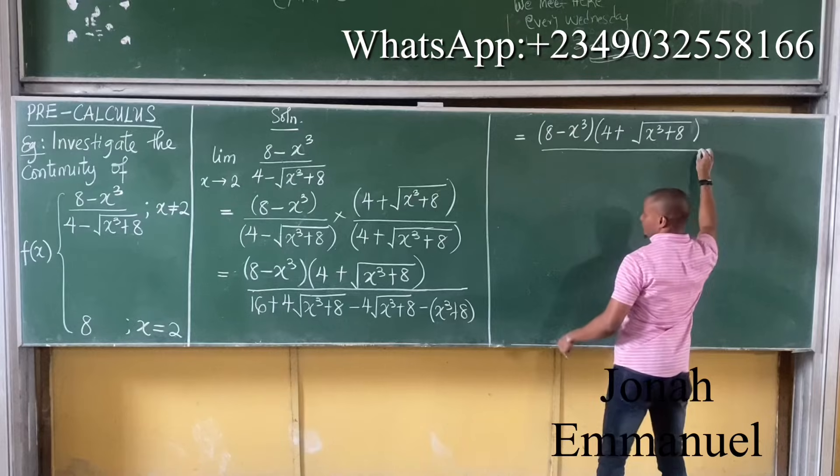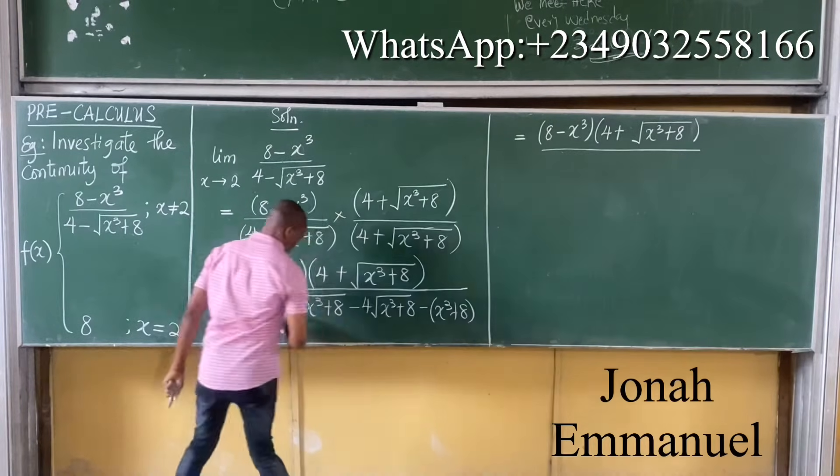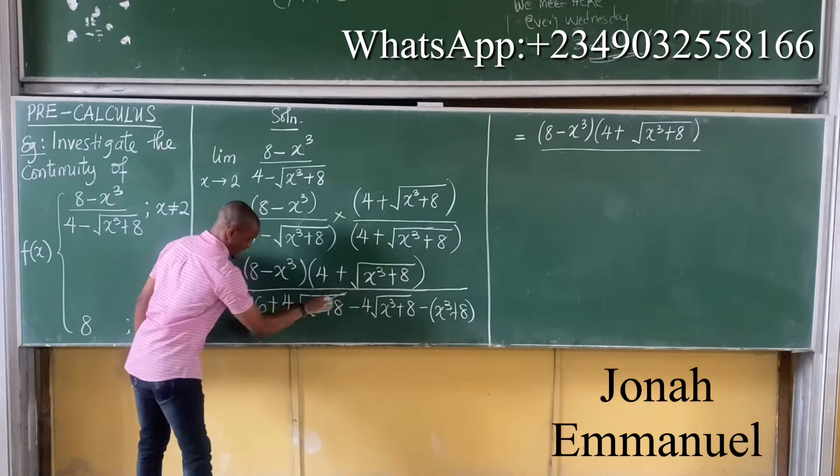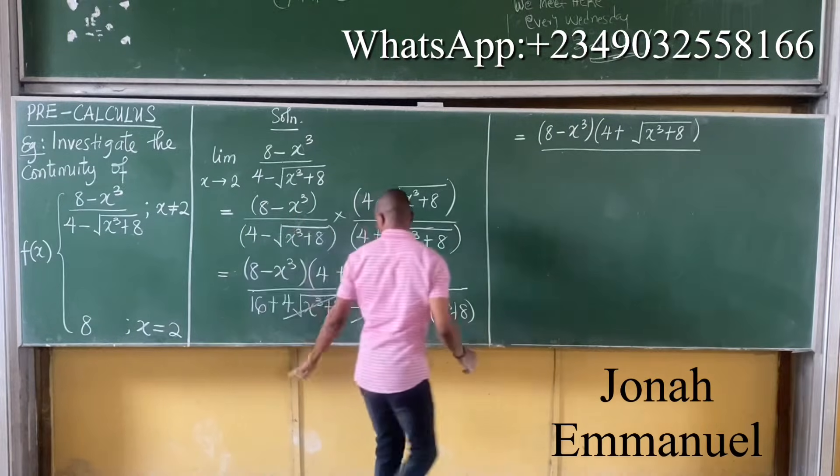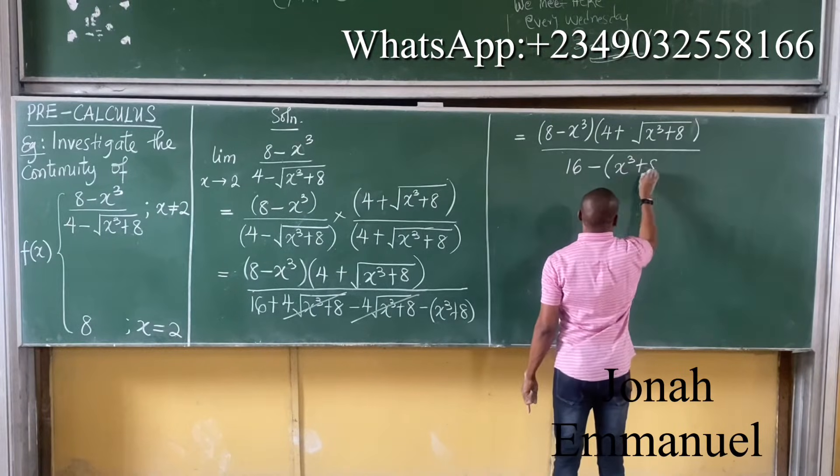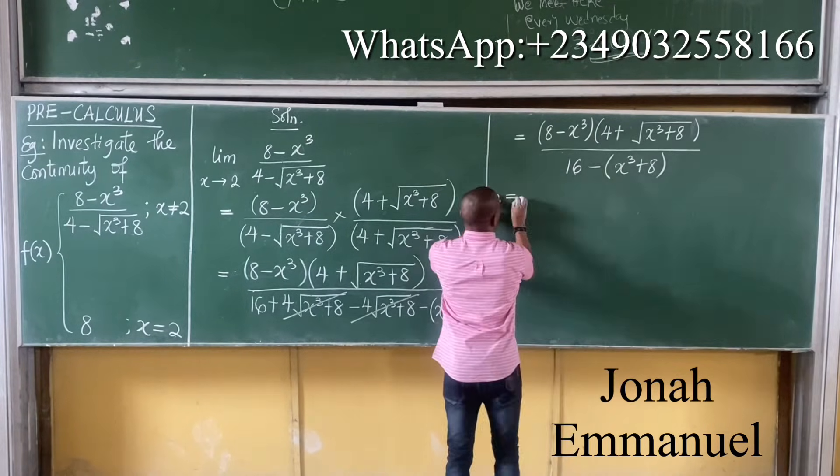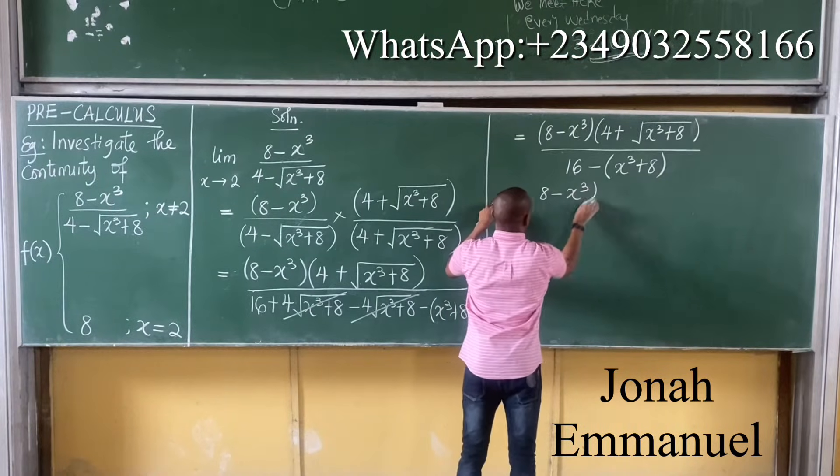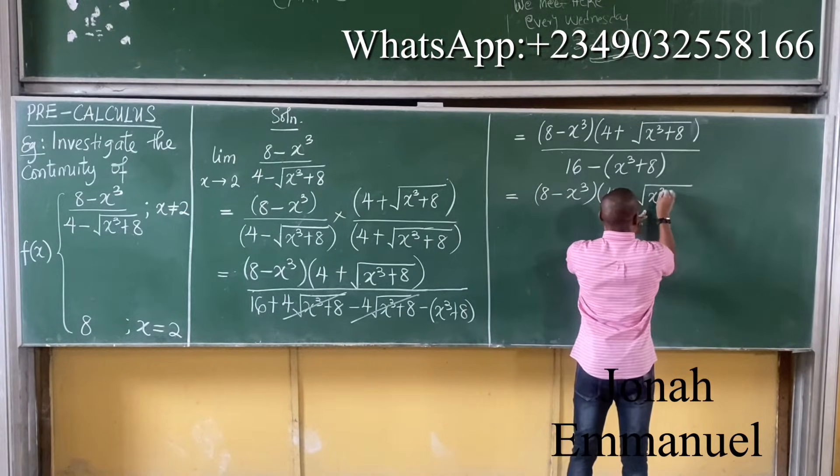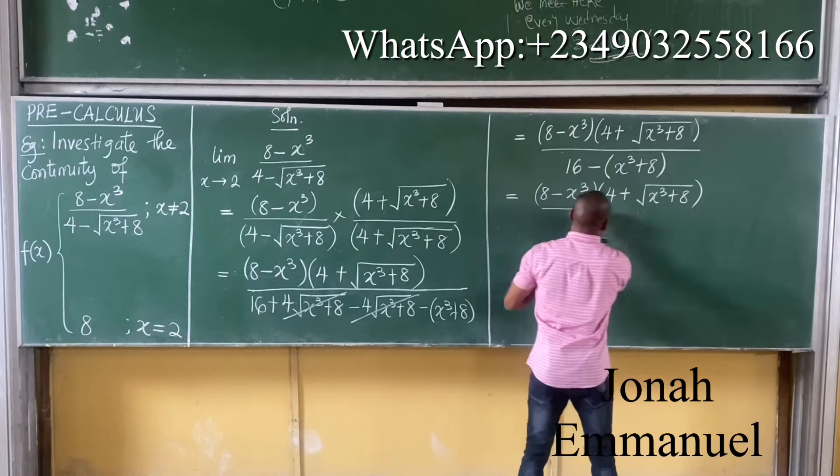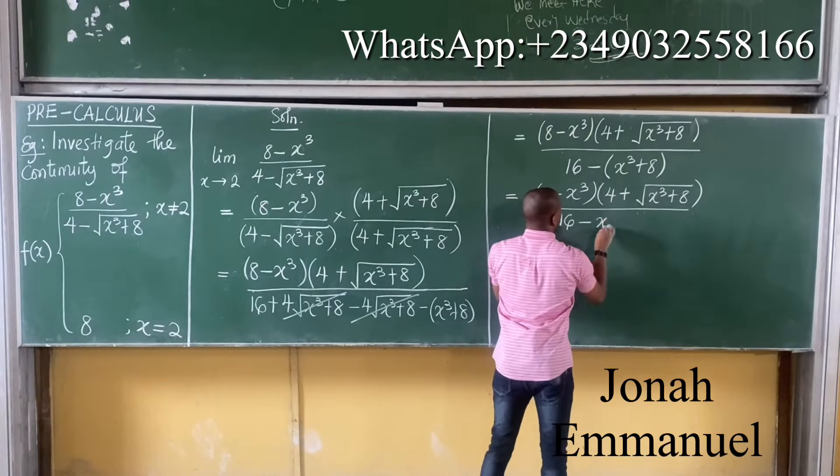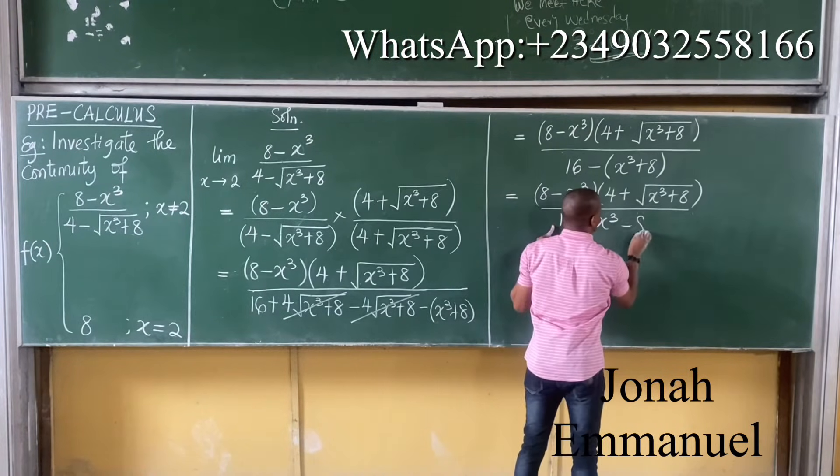From here you can see that plus 4 root x cubed plus 8 minus 4 root x cubed plus 8, this can cancel this. So I'm left with 16 minus in bracket x cubed plus 8. If I expand this, this now equals to 8 minus x cubed into 4 plus square root of x cubed plus 8, all over, expand this, minus x cubed minus plus minus 8.